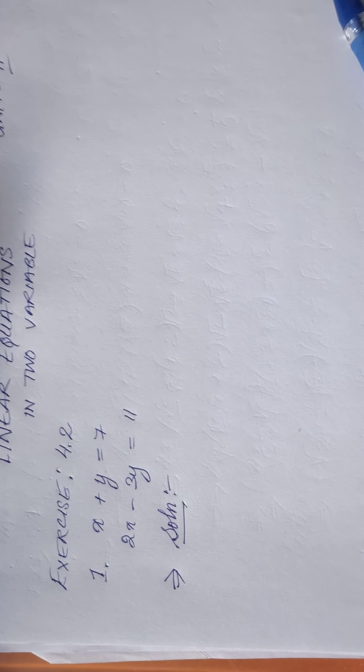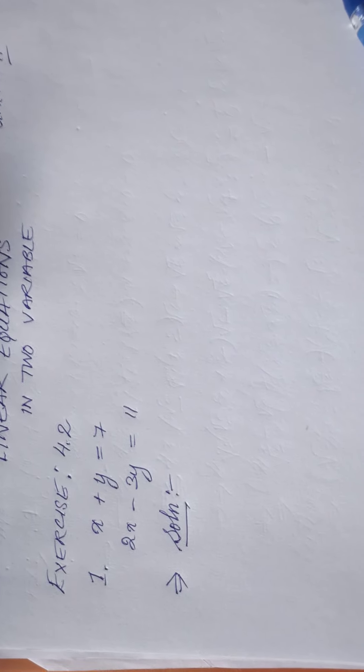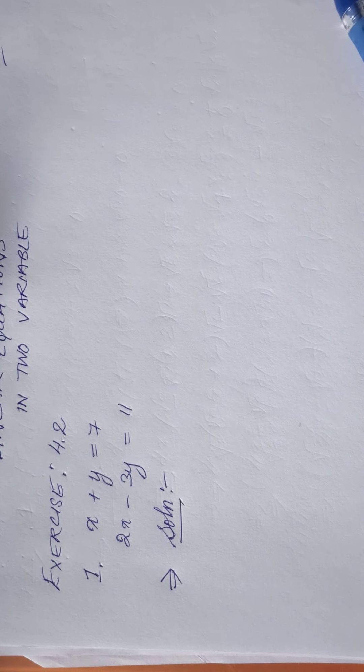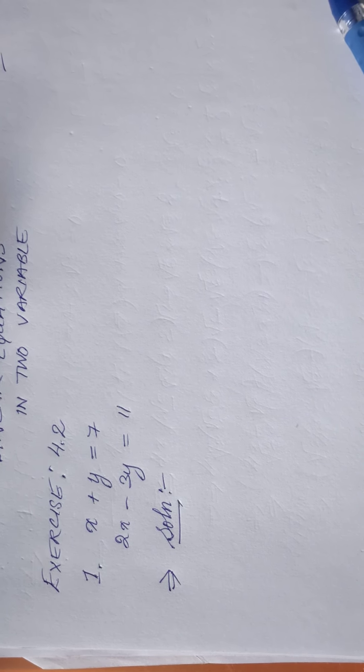Today we'll be learning about linear equations in two variables, exercise 4.2. Question number one: x plus y equals 7 and the second part of the equation is 2x minus 3y equals 11. I have to find the value of x and y here.